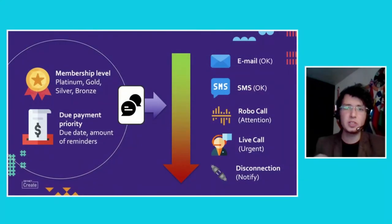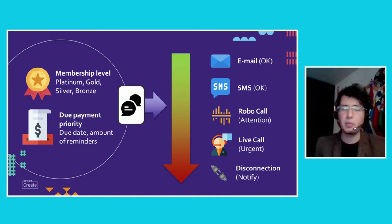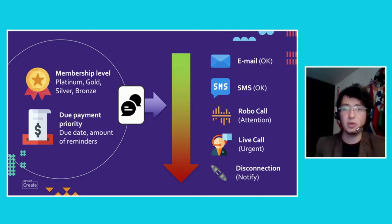All customers had a membership level — platinum, gold, silver, bronze — and also had due payment priorities. You couldn't reach out to a platinum user the same way you would reach out to a bronze user, because the priorities are different and there were relationships our customer wouldn't want to damage by sending dunning messages. The MCCM platform interpreted these business rules based on membership level and payment priority.